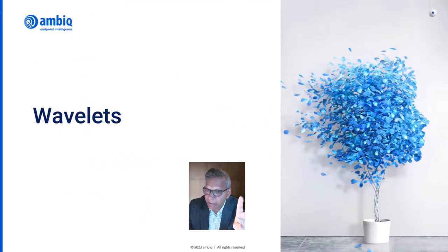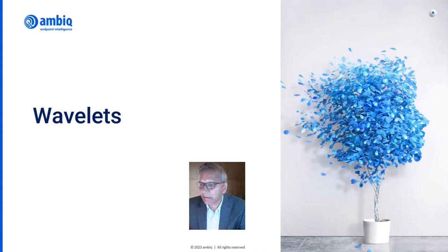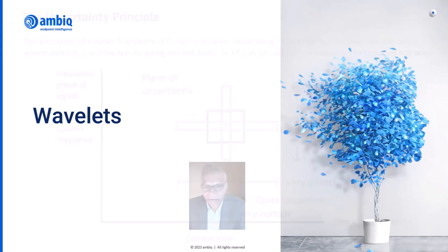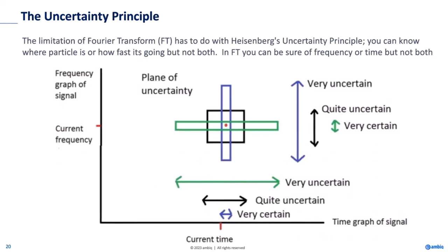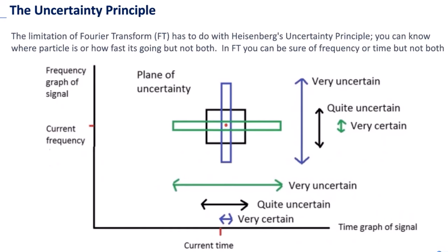The limitations we described — that Fourier transform cannot model transients properly in noisy environments — lead us to the next transform: wavelets. Going back to an important physics principle, the limitations of Fourier transform relate to Heisenberg's Uncertainty Principle, which says you cannot know where a particle is and how fast it's going simultaneously. Same thing in Fourier transform: you can be sure about frequency or time, but not both. Drawing Heisenberg boxes, Fourier gives you fixed constant rectangles, whereas for speech you need variable boxes.